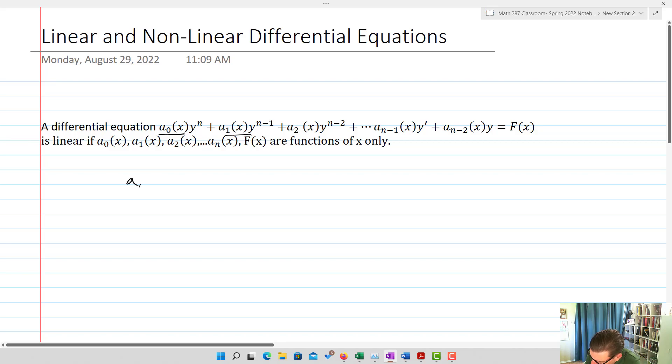I got a_0 of x, a_1 of x, a_2 of x, and these are just functions. Then we're going to have all the way down and this is f of x. We'll call that our right-hand side function.